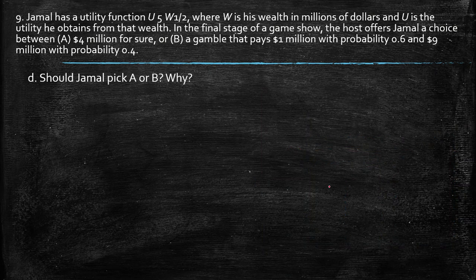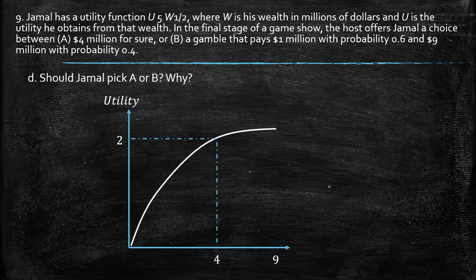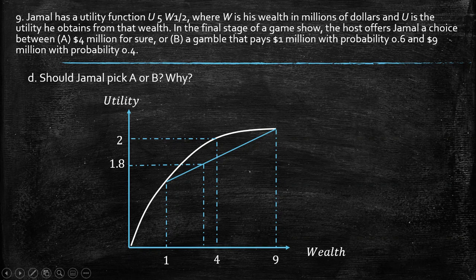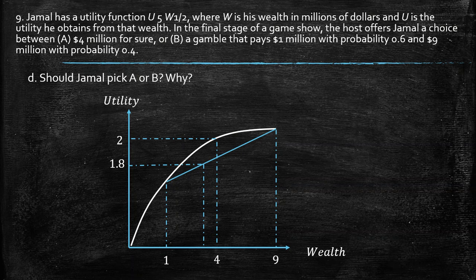So Jamal should pick gamble A, because it provides a higher expected utility. I hope this has helped you understand these basic questions of finance. If you have any suggestions or comments, I'm more than open to hear you. Thank you so much, and see you in the next video. Bye-bye.